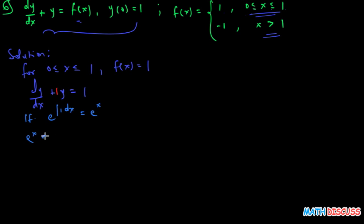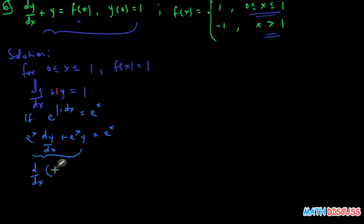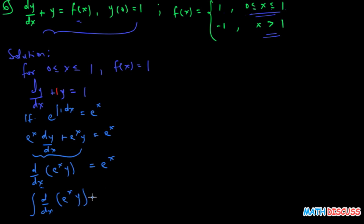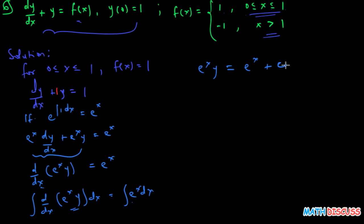We multiply both sides by the integrating factor e^x, giving: e^x dy/dx + e^x y = e^x. Applying the product rule, we can write this in composite form as d/dx of (e^x · y) = e^x. Integrating both sides with respect to x, we get e^x · y = e^x plus an arbitrary constant.